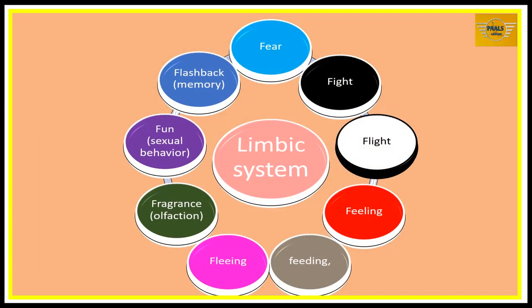As a general overview of the functions of the limbic system, we can use the big nine Fs to quickly recall these functions: Fear, Fight, Flight, Feeling, Feeding, Fleeing, Fragrance (that's olfaction), Fawn (that is sexual behavior), and Flashback (that is memory). So it coordinates a number of these activities with other parts of the brain system.